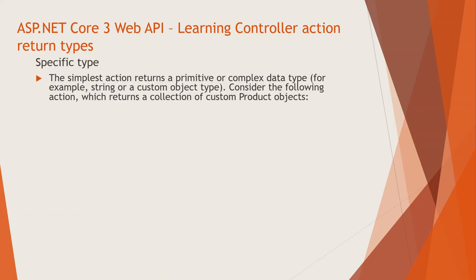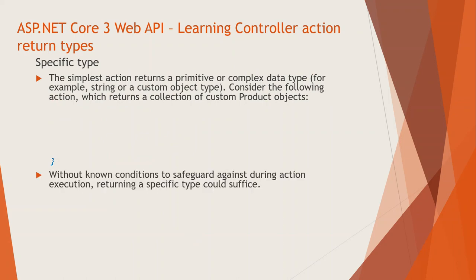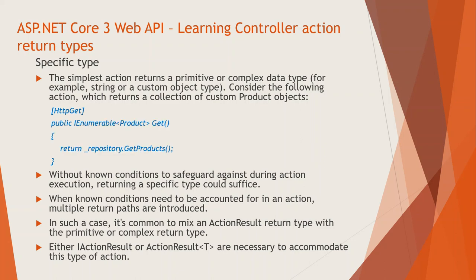So, specific type. The simplest action returns a primitive or complex data type — for example, a string or custom object type. Consider the following action which returns a collection of custom product objects. You are very familiar with this line of code which uses the HTTP GET verb for getting from the database. This is a GET method which returns an IEnumerable of product type. IEnumerable, as you are aware, is a list. It returns from a repository using underscore repository dot GetProducts, which gets all the products in the repository.